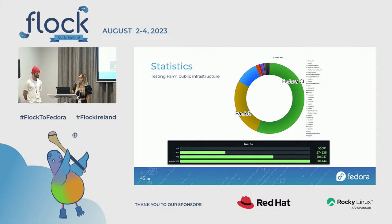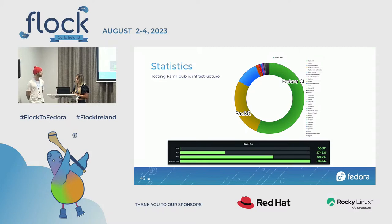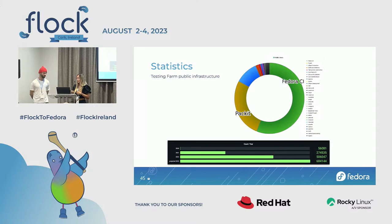Testing Farm statistics: looking at the image, in 2023 the projected number is 680,000 runs — it's not end of year yet but you can see it's really growing. As for the distribution of Testing Farm users, Fedora CI comes first, but Packit accounts for around a third of Testing Farm usage.